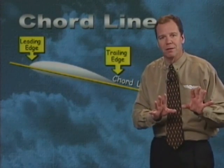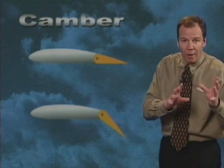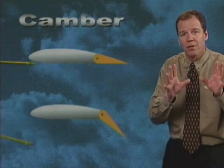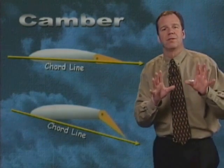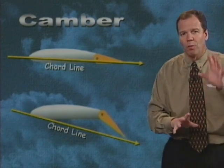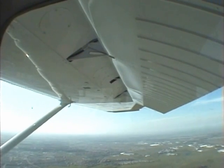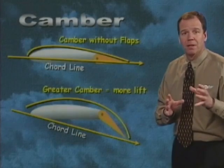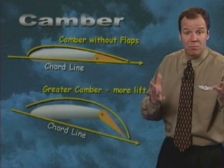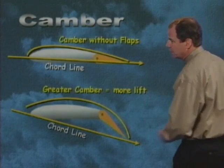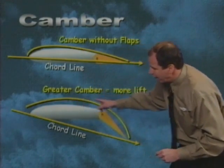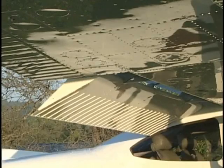Notice here, in this next graphic, that the shape of the airfoil — such as lowering the flaps or deflecting the ailerons — changes the chord line. This is important to remember: what we're really doing when we lower the flaps is changing the camber of our wing. The greater the camber, the greater the lift. Notice our camber without flaps, and our greater camber with the flaps.